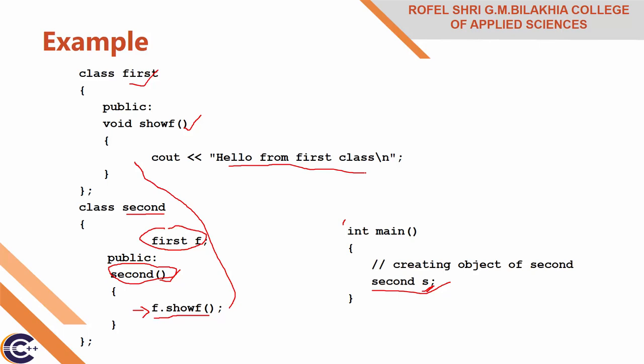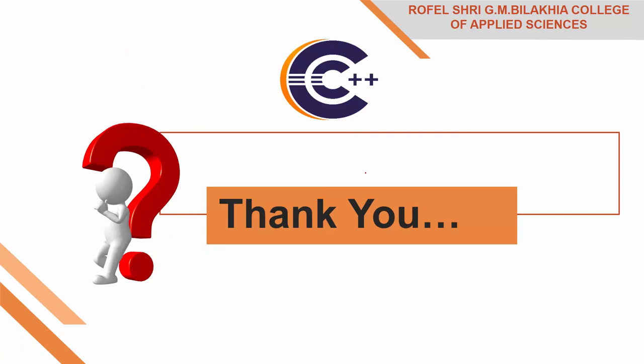Third difference: inheritance represents an 'is-a' relationship in object-oriented programming, but containership represents a 'has-a' relationship in object-oriented programming. So here I complete the topic of containership. Hope you understand this topic and the small example provided.